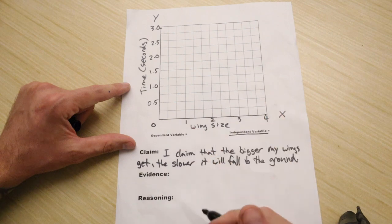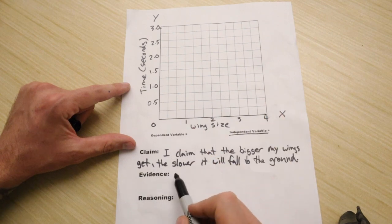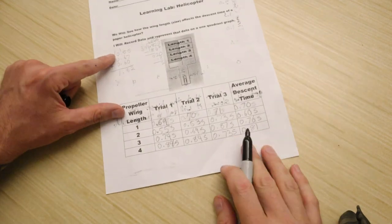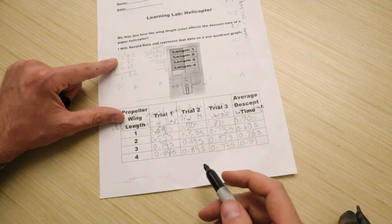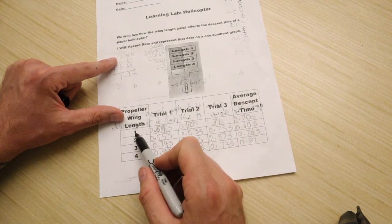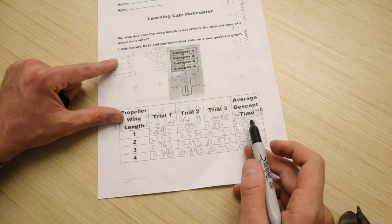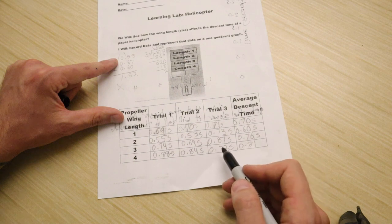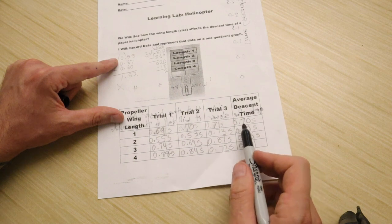Okay, so before I plot any coordinates, does my evidence support my claim? I claim that the bigger my wings are, the slower it will fall down to the ground. Well, if I look over at my data, does my evidence support that claim? And so far, just by looking at the numbers, it does because wing size 1, my smallest wing, has one of the slower times, not the slowest, that goes to wing size 2. Very weird, I don't know what happened there. But 70 seconds, and it does increase.